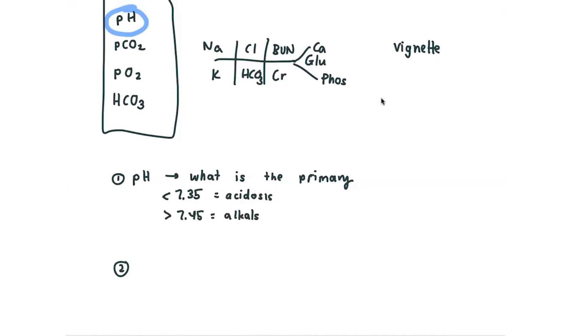And we use this surrogate, especially for ABGs, we use this number of 7.4 as kind of our middle ground, that under 7.4, acidosis, over 7.4, alkalosis.